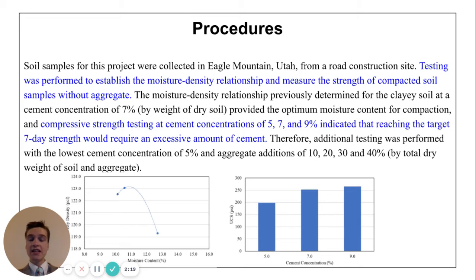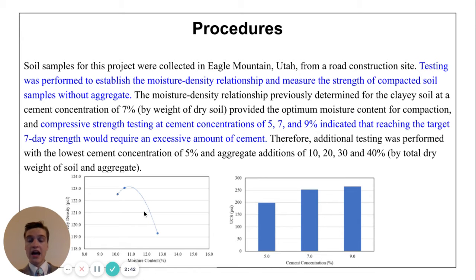Soil samples for this project were collected in Eagle Mountain, Utah from a road construction site. Testing has already been performed on this soil without any aggregate and the results are shown below. This is a moisture density curve. This shows that as the moisture increases, the density increases then decreases. We want the maximum density because that is where the highest compressive strength will be. For this soil without any aggregate, the maximum soil density is found at 11% water at time of compaction. This percentage was used subsequently for the rest of these compressive strength samples.